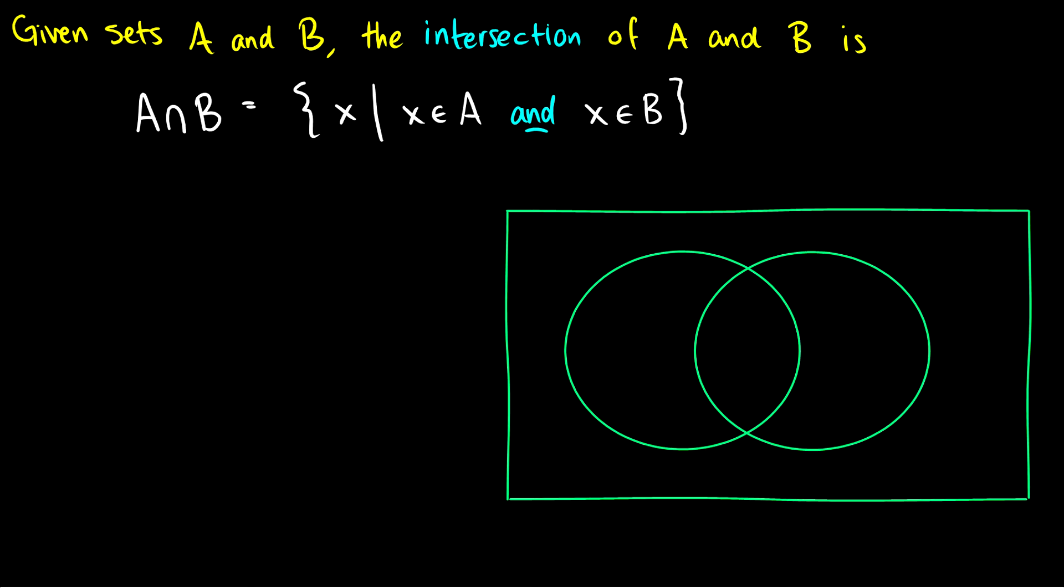The intersection requires two sets. It requires a set A and a set B. No universe is required in this case. So given A and B, it's all the elements that occur in both A and B.